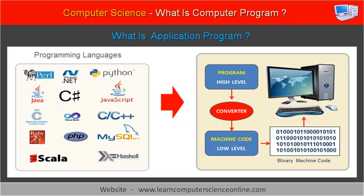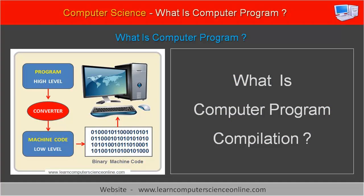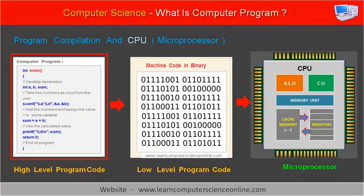However, the high-level program needs to be converted to machine code instructions in binary, and this conversion is referred to as program compilation. The computer programs written in a high-level programming language must first be converted to machine code in binary. The microprocessor inside the computer can understand and execute only binary code, which consists of only zeros and ones. Therefore, the high-level computer programs are first converted to binary code by using a special system program called the compiler, and this conversion process is referred to as program compilation.